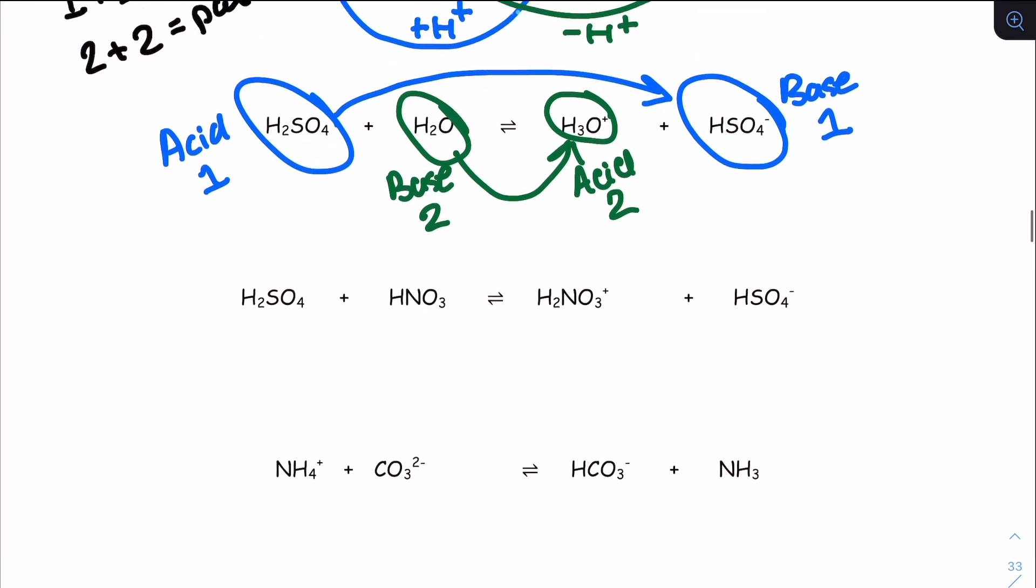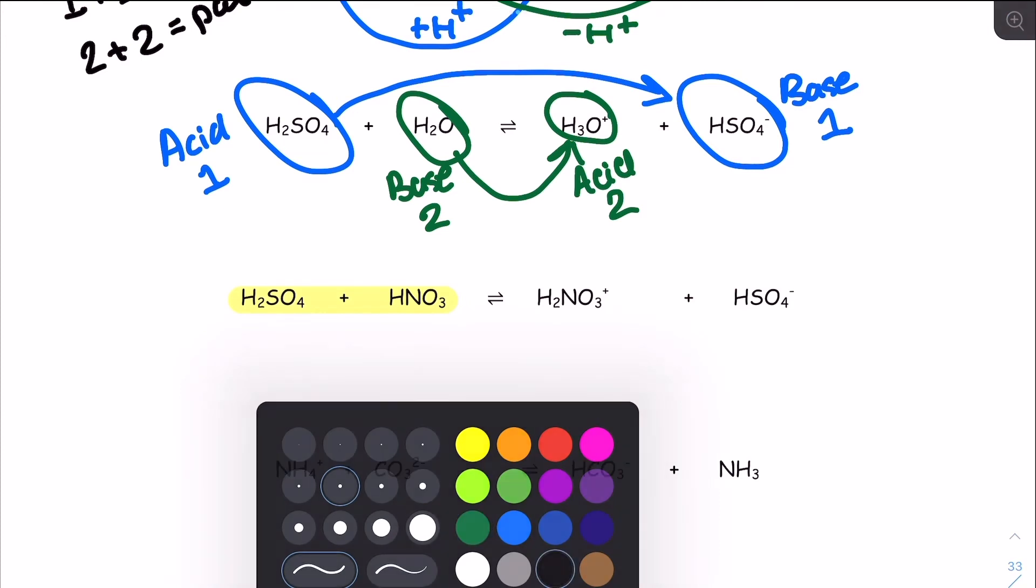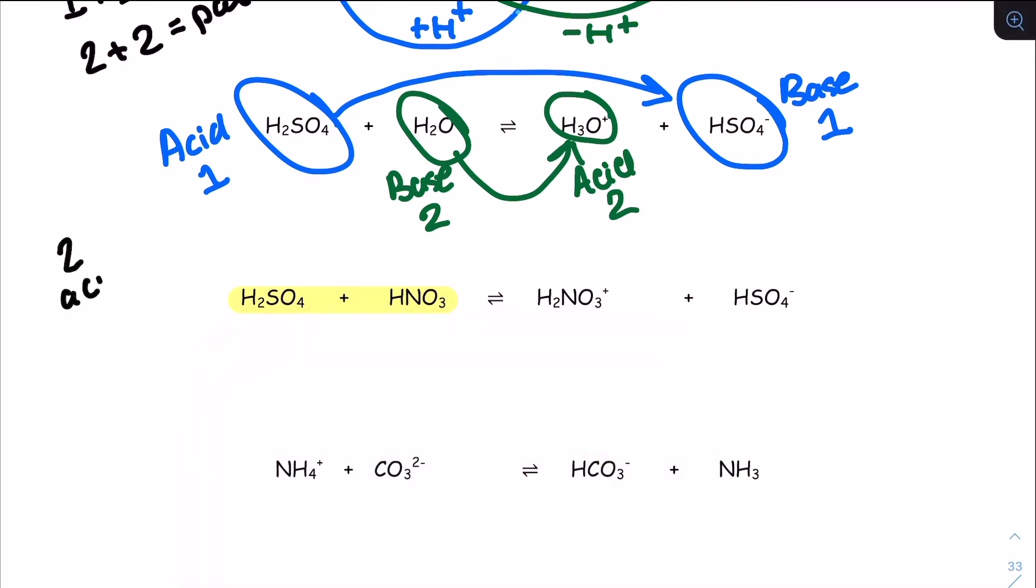Here in this example, you can see we have sulfuric acid, H2SO4, and nitric acid, HNO3. So that's two acids. Now, when you're presented with a scenario like this, the stronger of the two acids will donate a proton to the other, so the weaker of the two acids becomes a base for the purposes of this scenario.